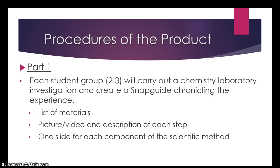This lesson is broken up into two parts. Part one: each of the small student groups will carry out a chemistry lab investigation and create a snap guide of the experience. That snap guide should include a list of the materials, pictures and/or video, and a description of each step, with a minimum of one slide for each component of the scientific method: problem or question, hypothesis, procedure, observations and data, analysis, and conclusion.